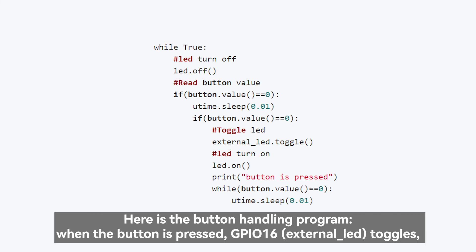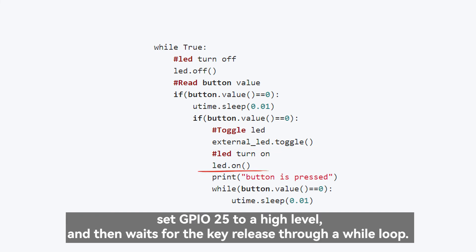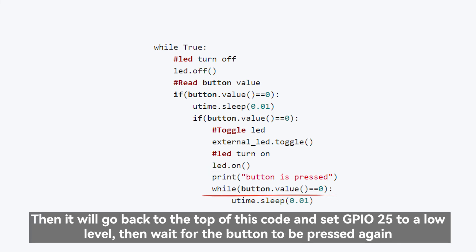Here is the button handling program, when the button is pressed, GPIO 16 external LED toggles, set GPIO 25 to a high level, and then waits for the key release through a while loop. Then it will go back to the top of this code and set GPIO 25 to a low level, then wait for the button to be pressed again.